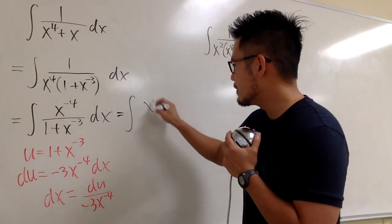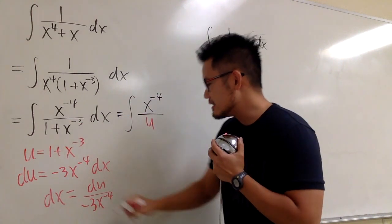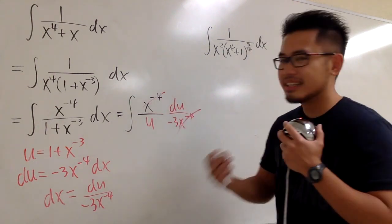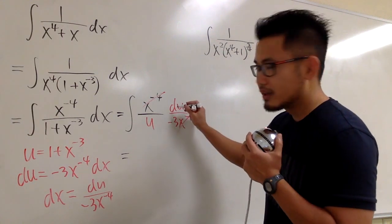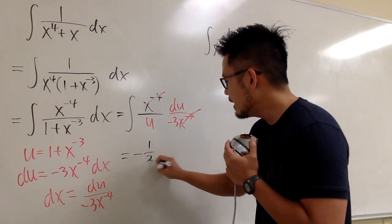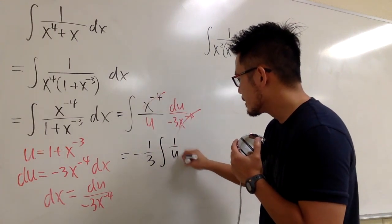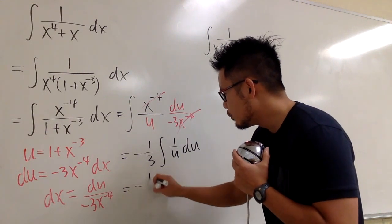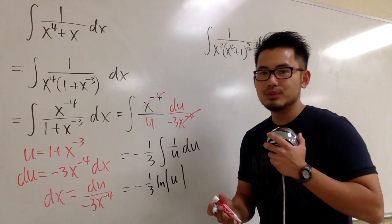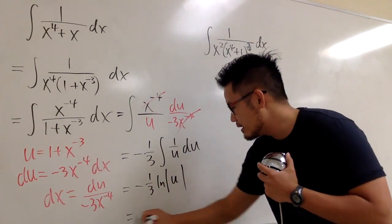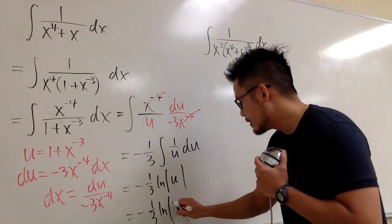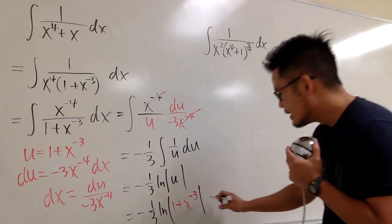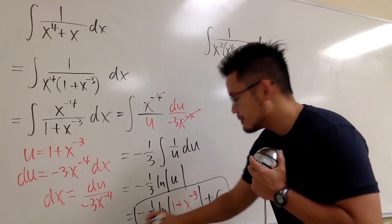Taking this integral into the u world: on top we have x to the negative 4, the bottom is u, and dx is du over negative 3x to the negative 4. The x to the negative 4 terms cancel precisely. We bring 1 over negative 3 to the front, leaving the integral of 1 over u du. The integral of 1 over u is ln of the absolute value of u. So altogether this is negative 1/3 times ln of the absolute value of 1 plus x to the negative 3, plus C. We need the absolute value since the inside could be negative. And we're done — box the answer.